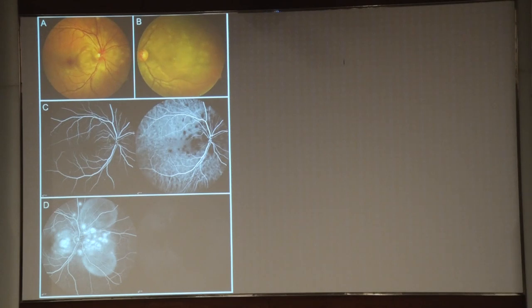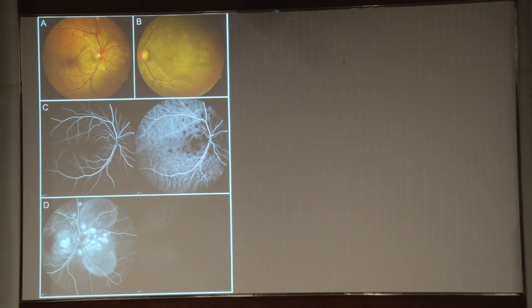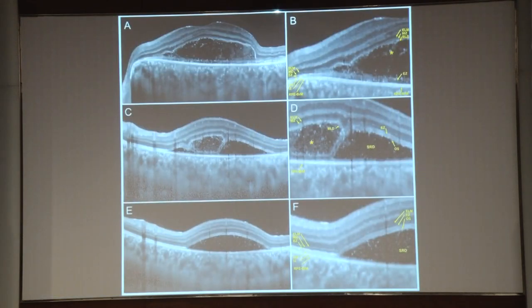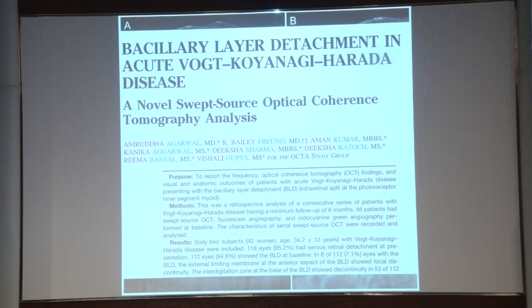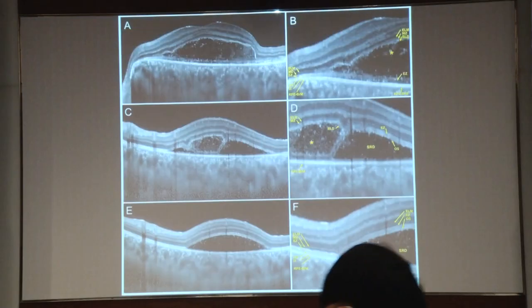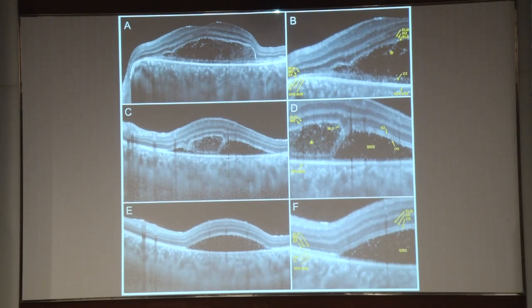VKH — this is a classic textbook picture, and many colleagues tell me they have a unilateral VKH. But remember, unless you have an ICG, you cannot really say if it's a unilateral or bilateral disease. VKH, by definition, is a bilateral disease. You can see the textbook picture of choroidal granulomas in the stroma, and the fluorescein shows multiple hyperfluorescent areas with pooling of the dye. In VKH, you can have compartmentalization of fluid on OCT, though this is not specific to VKH — you can also find it in MPPE and other disorders. This is a publication on bacillary layer detachment in VKH, essentially demonstrating the compartmentalization of fluid.